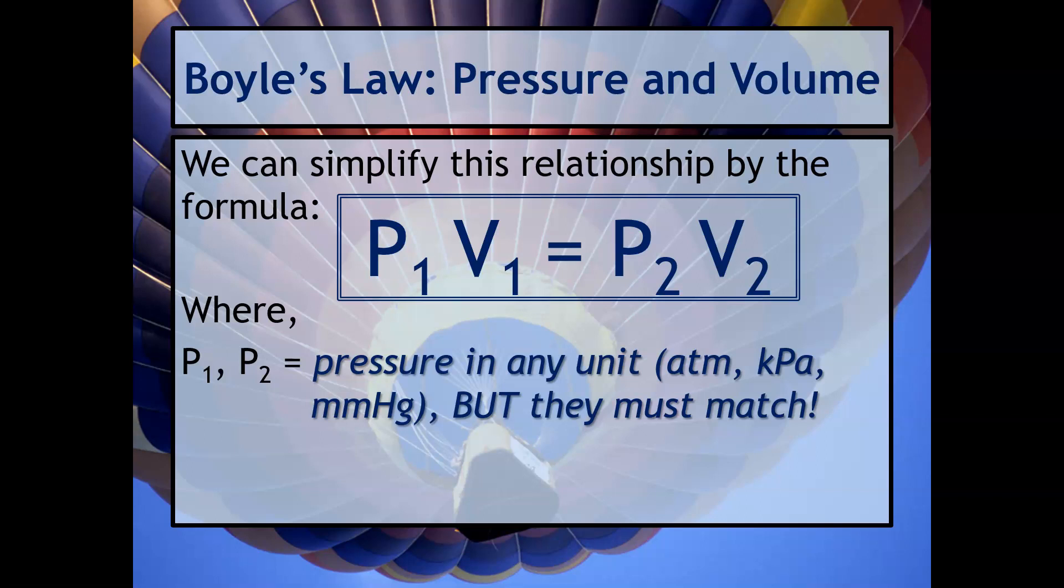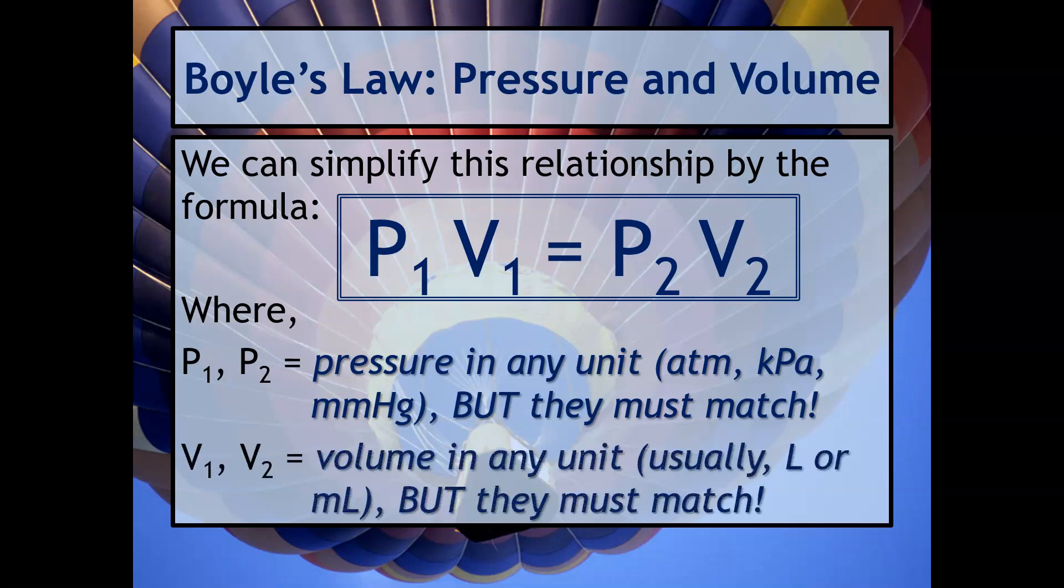V1 and V2 represent volume and they can be in any unit, but they're usually in liters or milliliters. Sometimes I see centimeters cubed, but more than likely you won't see that. The important thing here is these also have to match. So if you have one in milliliters and the other one in liters, you've got to convert one of them.